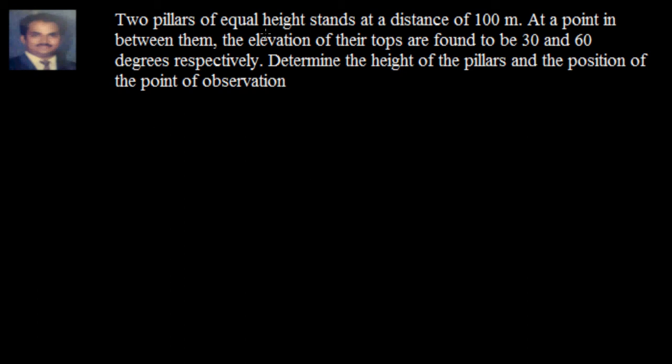Two pillars of equal height stand at a distance of 100 meters. At a point in between them, the elevation of their tops are found to be 30 and 60 degrees respectively. Determine the height of the pillars and the position of the point of observation.